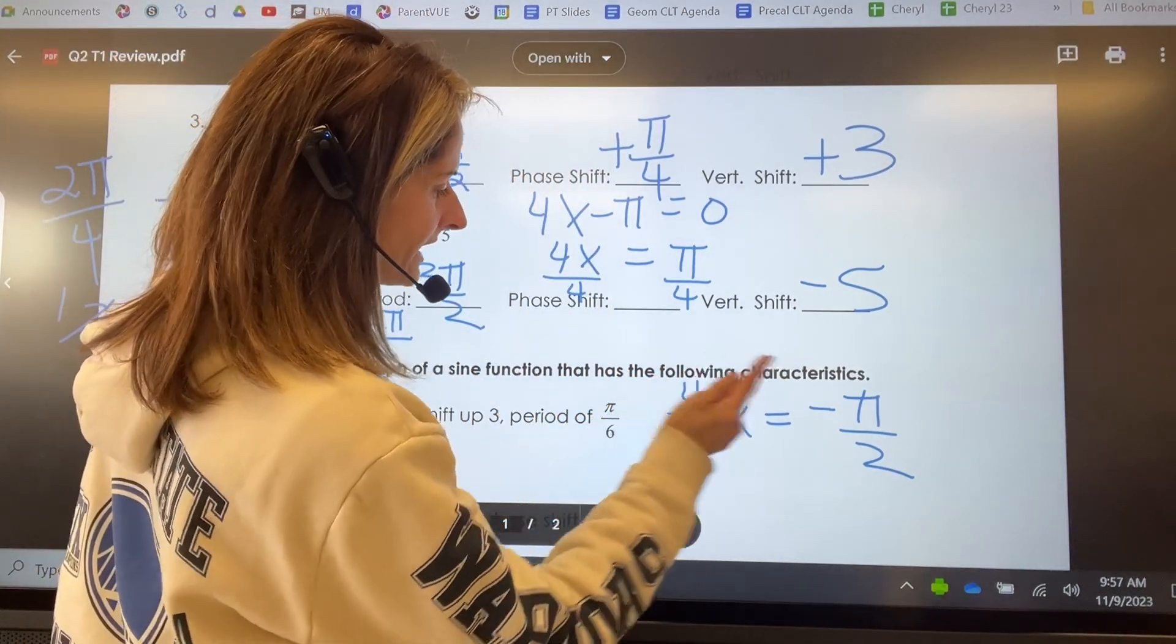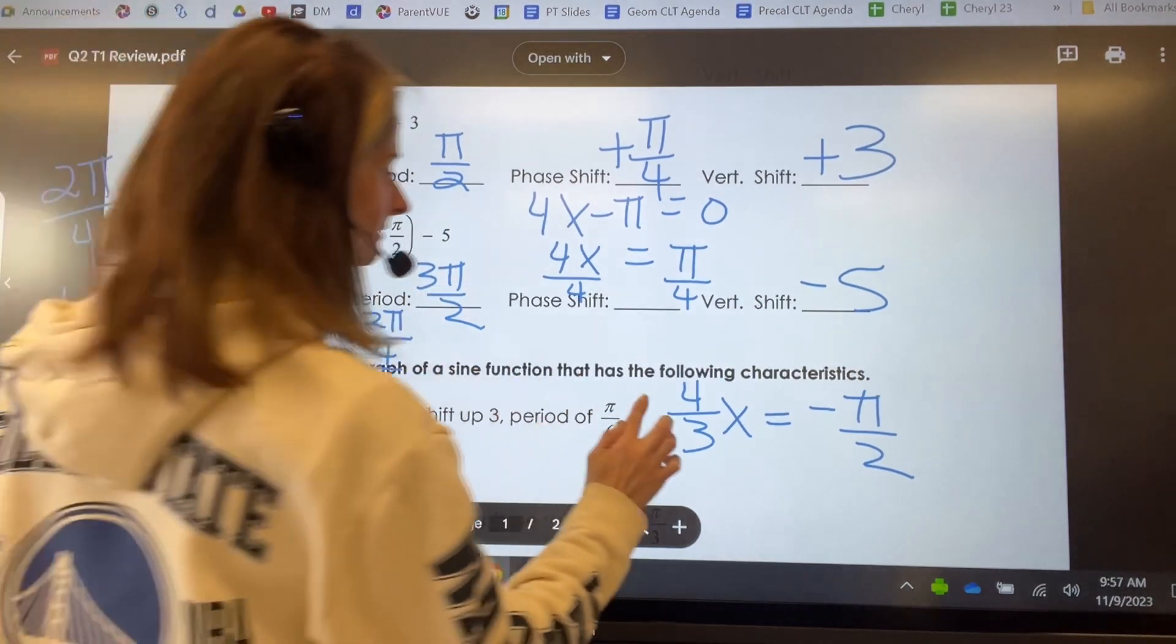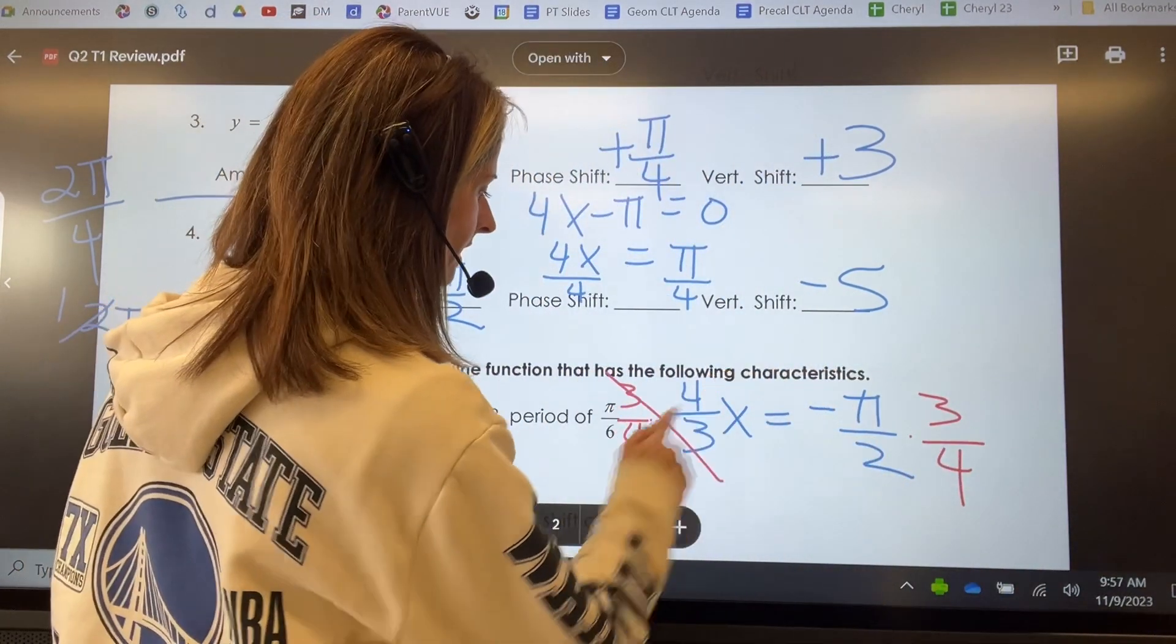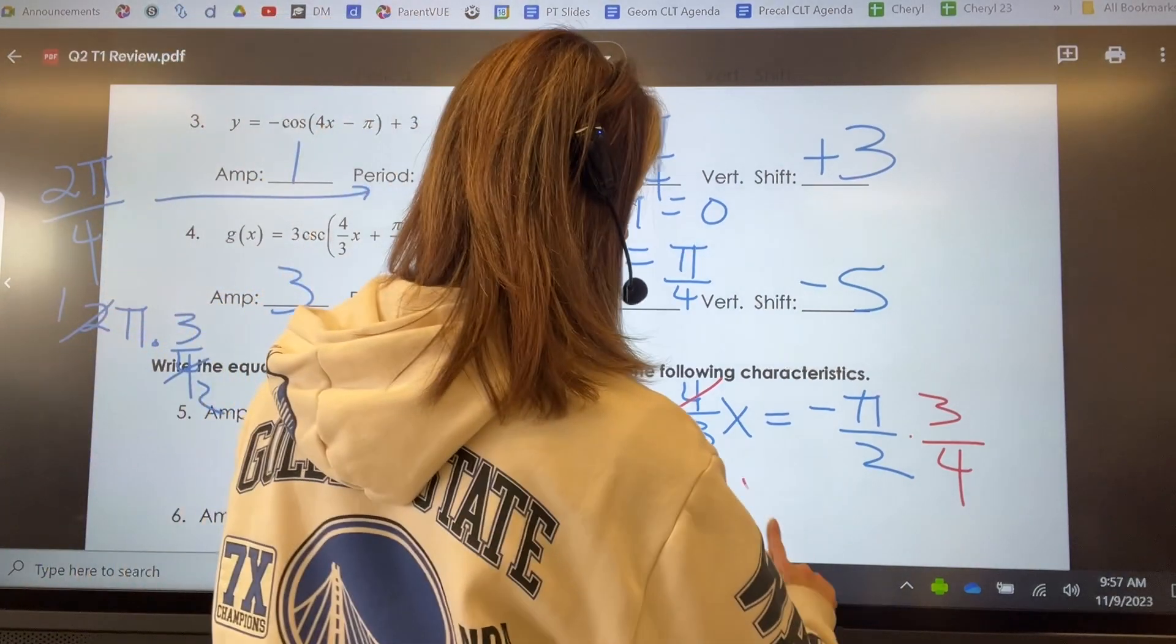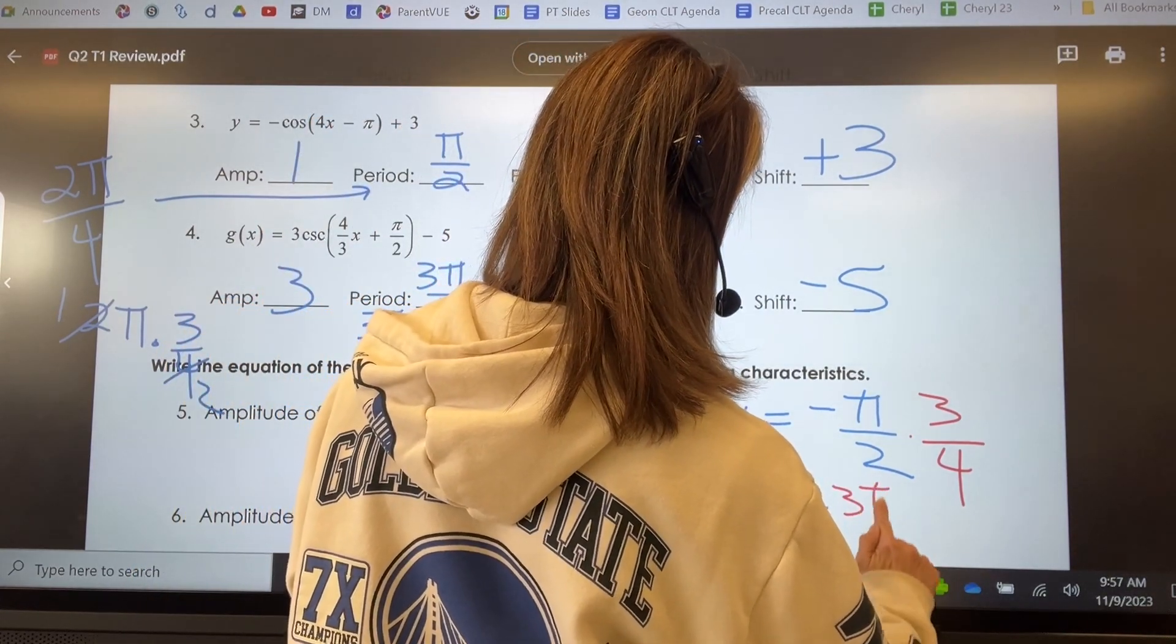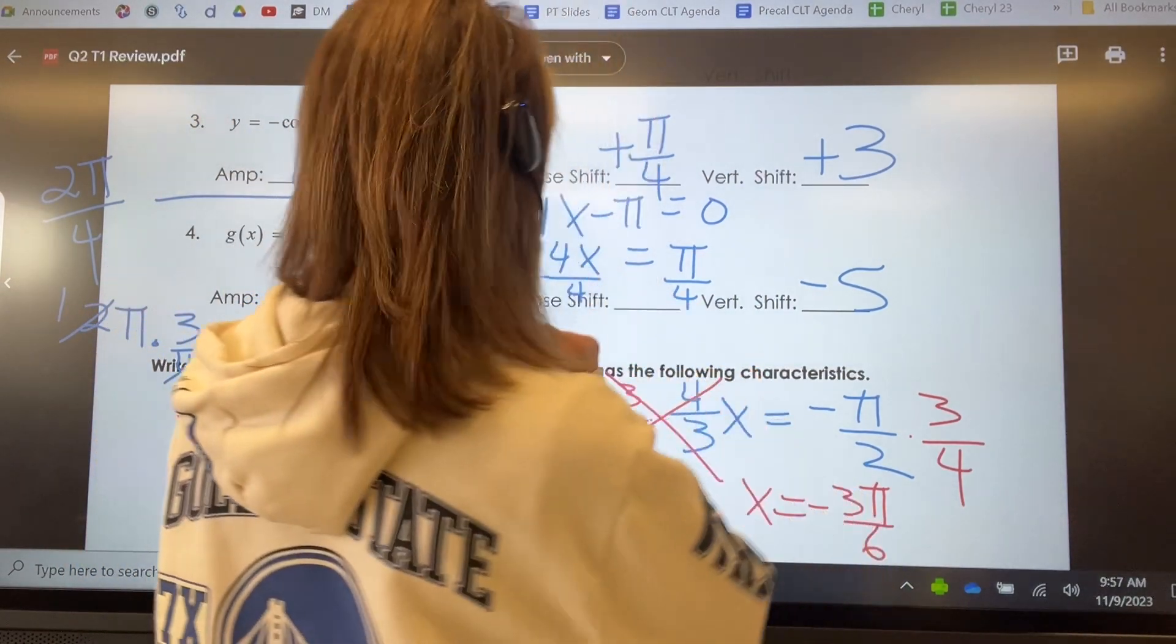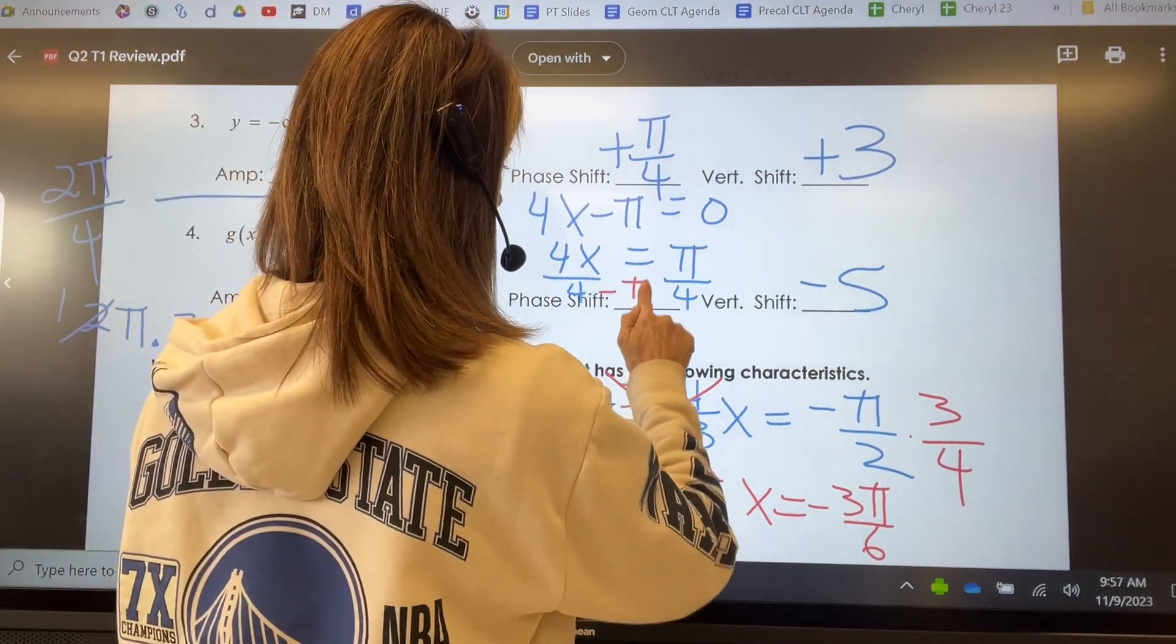Now, I'm going to multiply both sides by the reciprocal of four thirds in a different color. Three fourths. I know some of us had algebra during COVID, so we're not comfortable with solving equations like this. But now you can see we've got x equals negative three pi over six. And that could be simplified to negative pi over two.